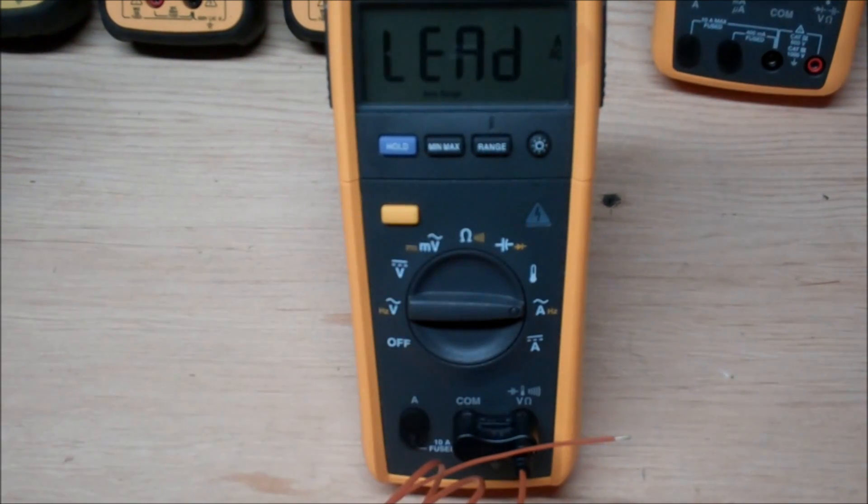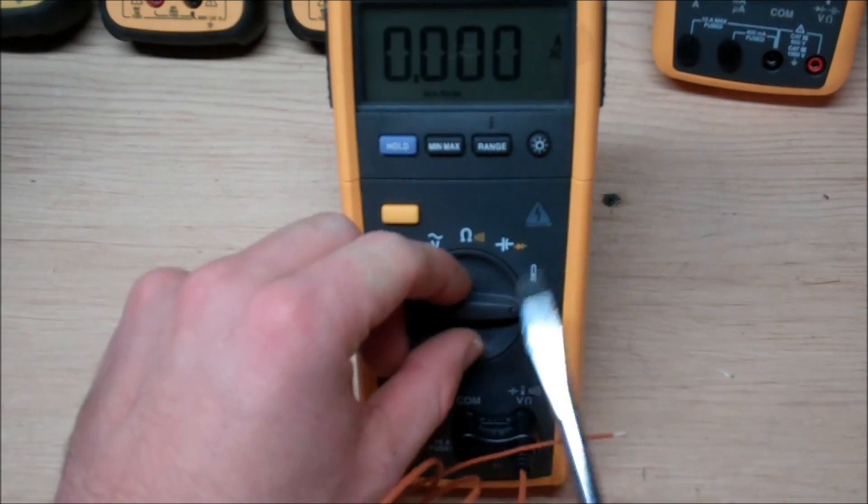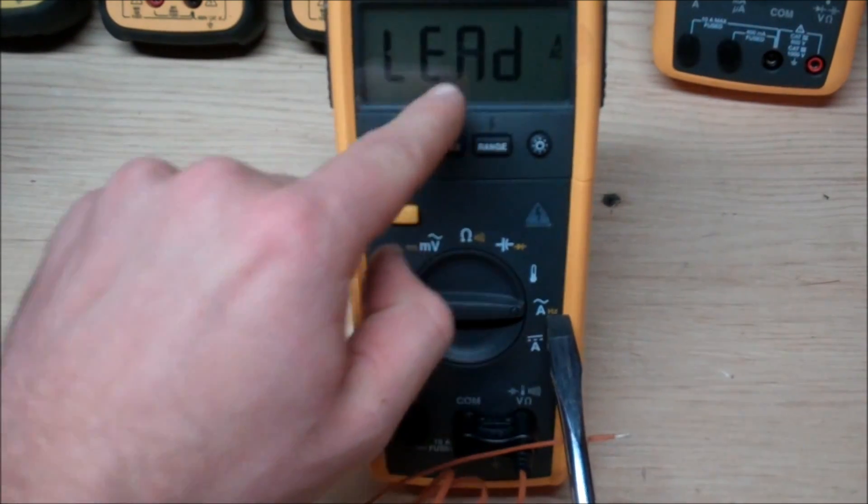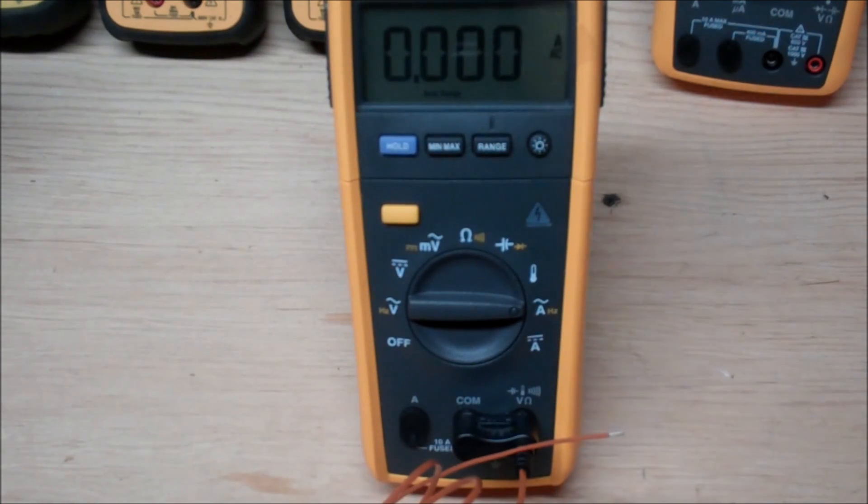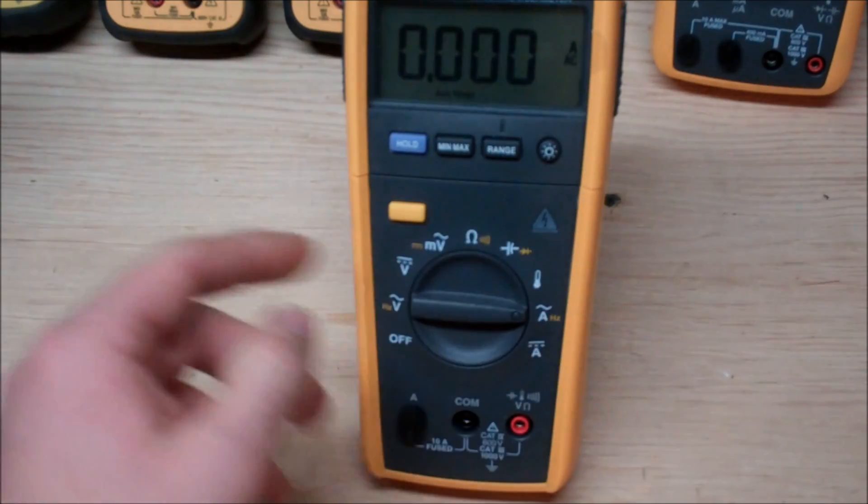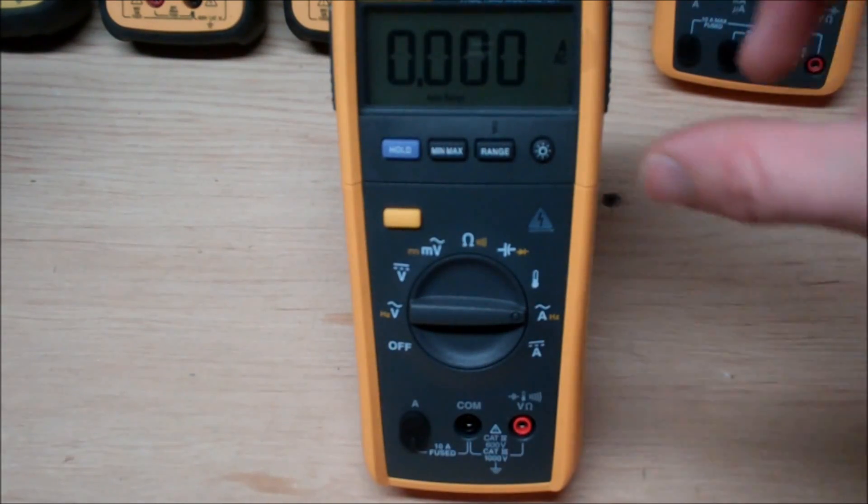Now the next measurement I want to do here for the capabilities of this multimeter is the actual amperage. Now if we quickly look, you can see that it highlights lead. I have the thermocouple still hooked up in here and it's saying that you're not in the right terminals. So it's a really nice safety feature which is going to help you prevent from blowing fuses. Really nice to see that they've integrated that design.